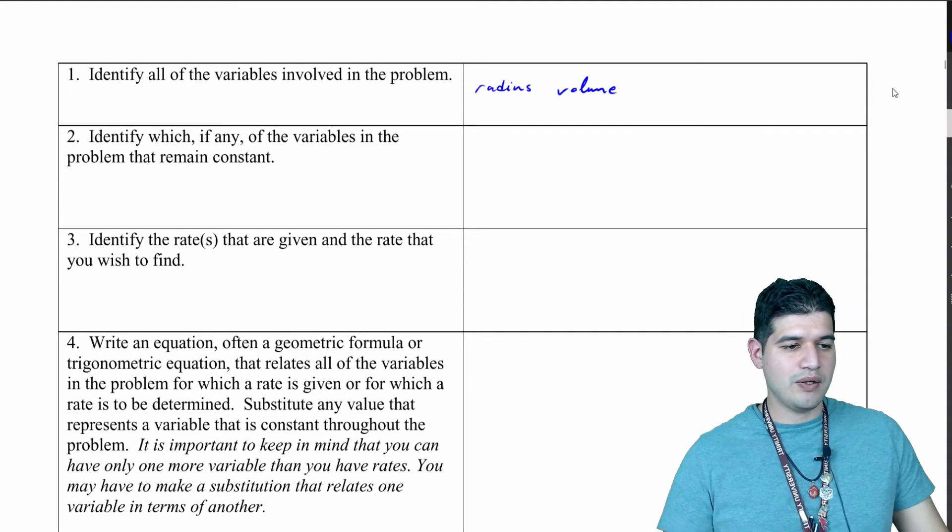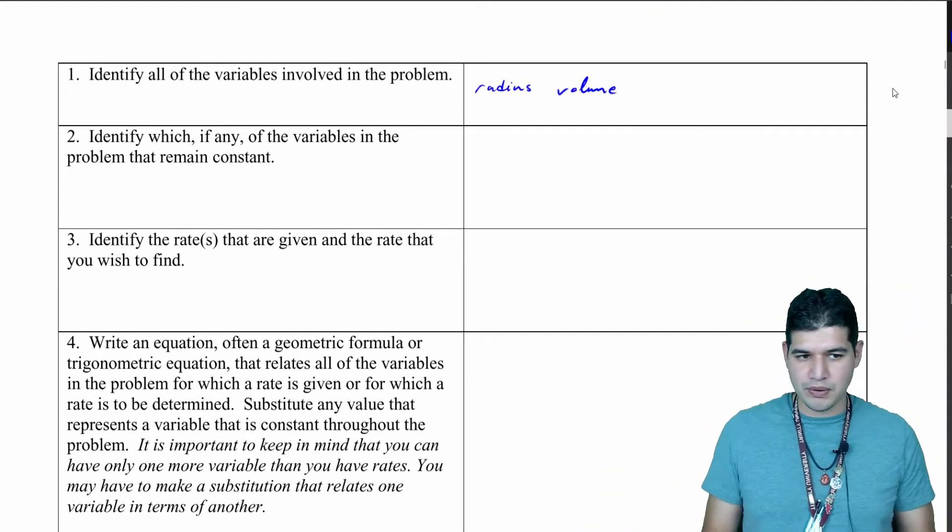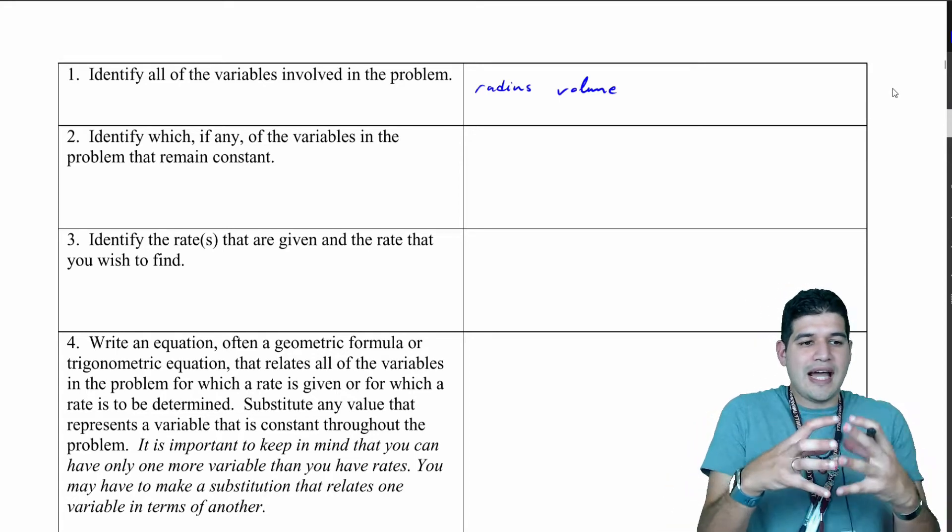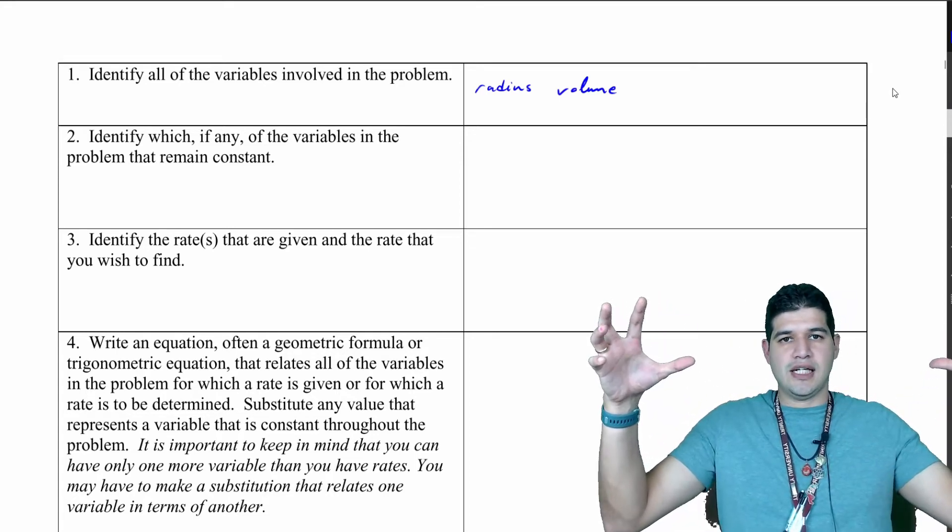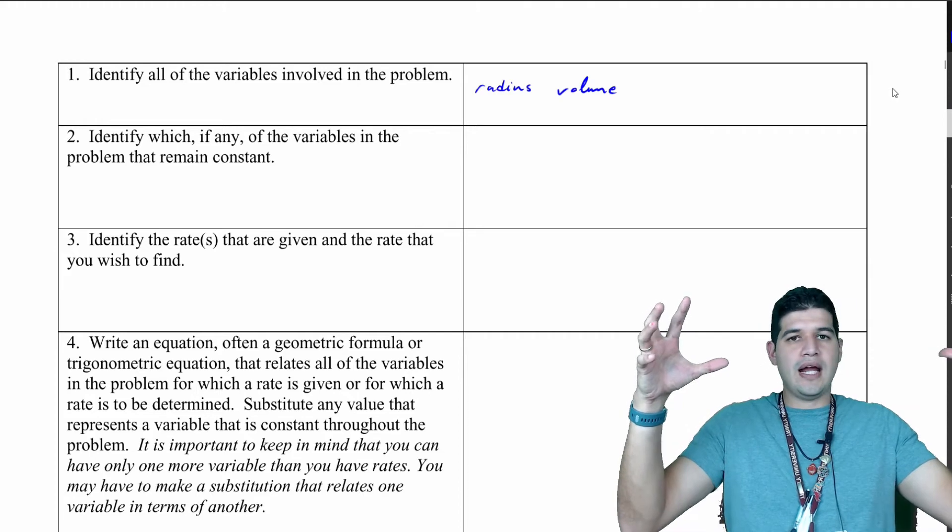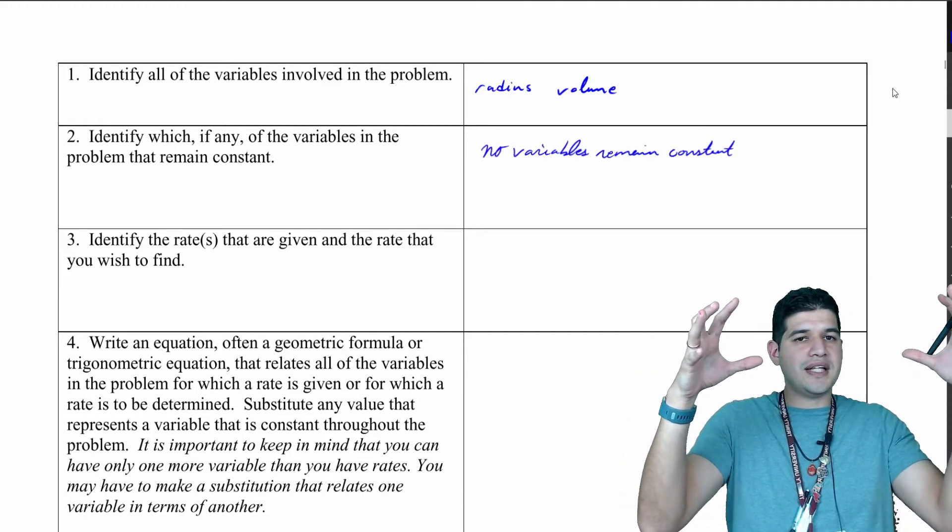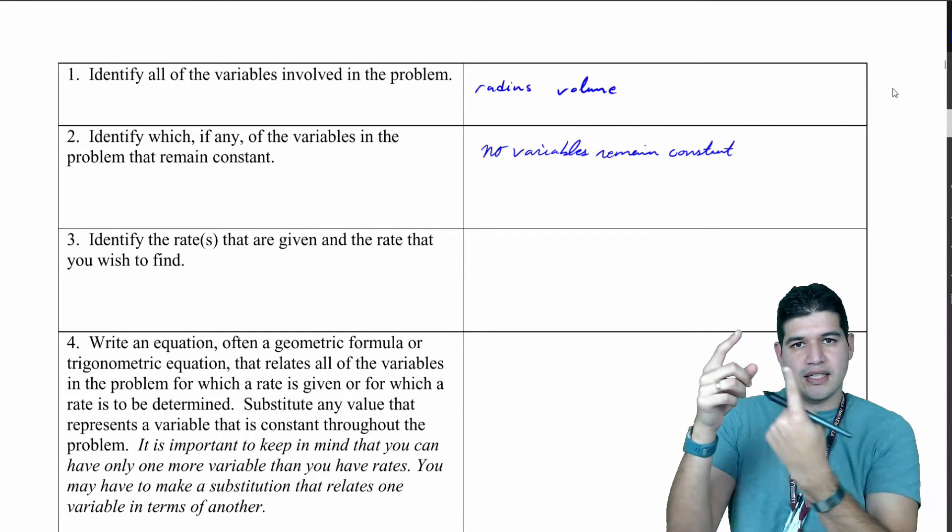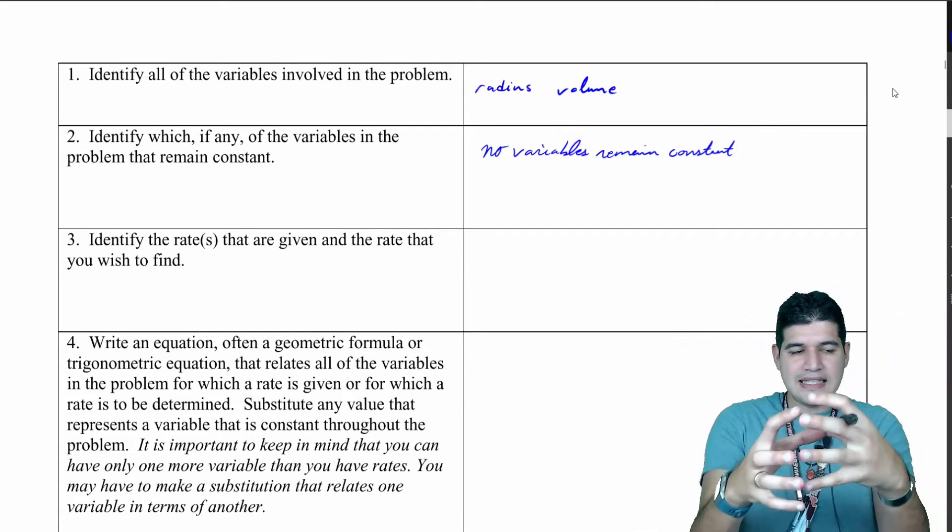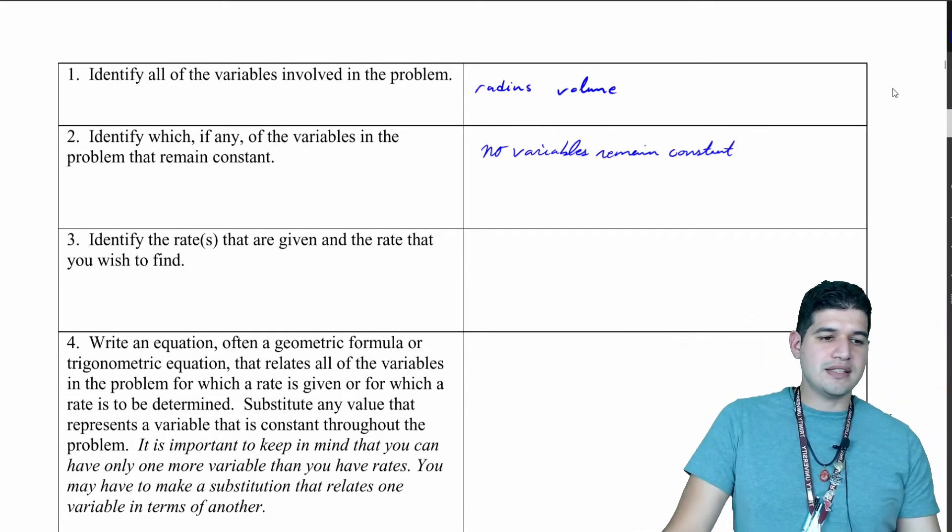Now we want to identify which, if any, of the variables in the problem remain constant. This balloon is leaking air and blowing air out, so nothing's staying constant. The volume is decreasing, the radius of that balloon is decreasing, so nothing remains constant.